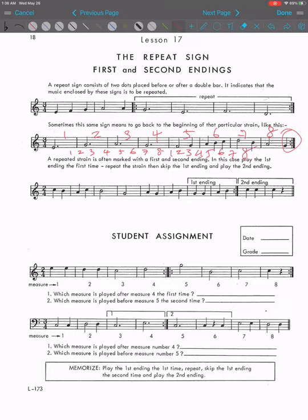So sometimes the repeat sign is marked with the first and second ending. So when you do that, the first time you play the first ending, the second time you have to skip the first ending and go to the second ending. So if I number the measures like 3, 4, 5, 6, 7, 8, 9, 10, like this...